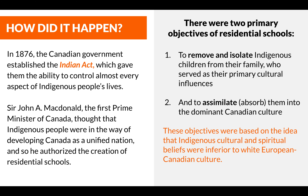In 1876, the Canadian government established the Indian Act, which gave them the ability to control almost every aspect of Indigenous peoples' lives. Sir John A. Macdonald, the first Prime Minister of Canada, thought that Indigenous people were in the way of developing Canada as a unified nation, and so he authorized the creation of residential schools.